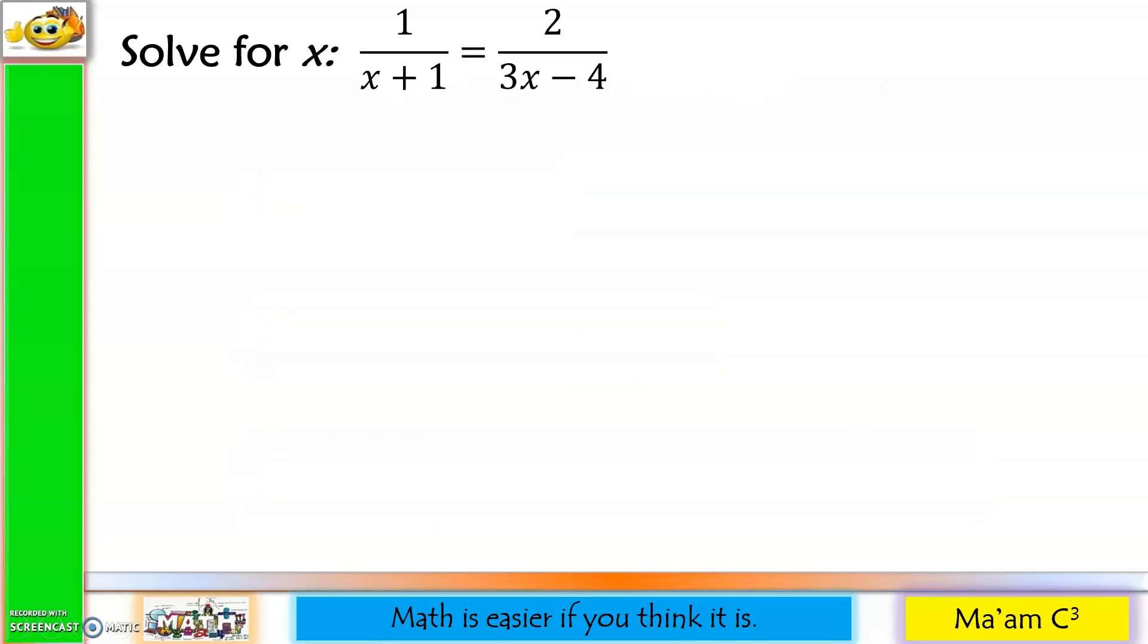Let's have the first example. Solve for x: 1 over x plus 1 is equal to 2 over 3x minus 4. So our first step is to find the LCD. Since the denominators are already prime, the LCD is the product of these two denominators.